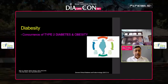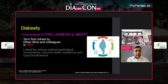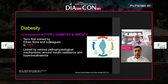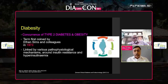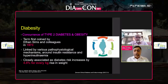Now coming to diabesity — diabetes is nothing but concurrence of type 2 diabetes and obesity. This term was first coined by Ethan Sims and colleagues in 1973. The reason is that the two diseases are linked by various pathophysiological mechanisms, which revolve around insulin resistance and hyperinsulinemia. Part of this was highlighted by Dr. Neeta's presentation.